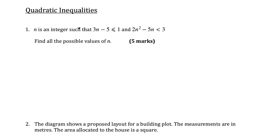In this video I'm going to be taking a look at quadratic inequalities and I'm going to do four exam style questions. The first one says n is an integer such that 3n - 5 ≤ 1 and 2n² - 5n < 3. Find all the possible values of n. Before we get into this, keep in mind you do need to be confident with factorizing quadratics before you get into quadratic inequalities.